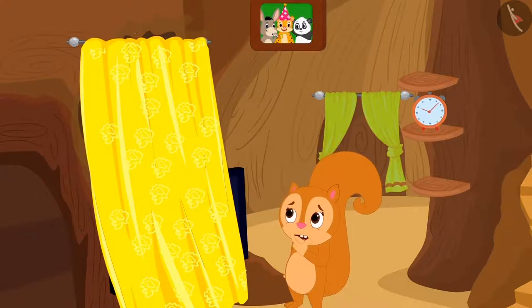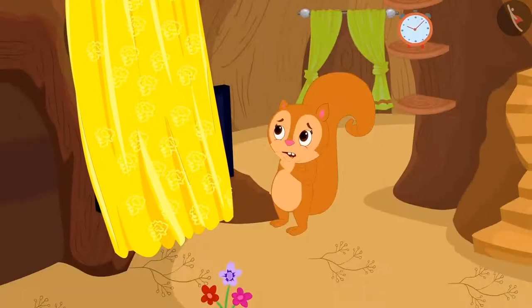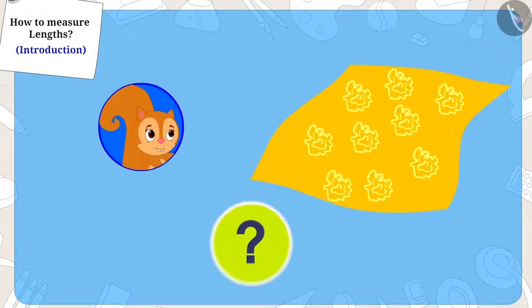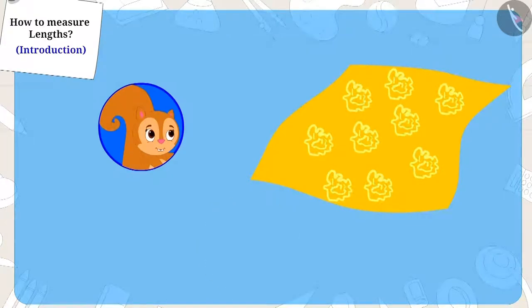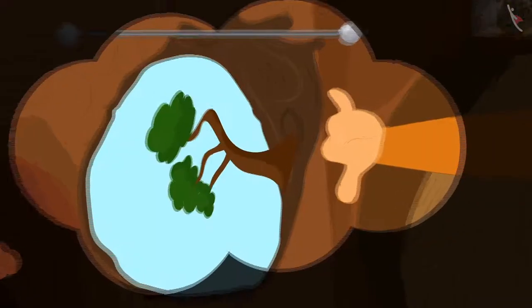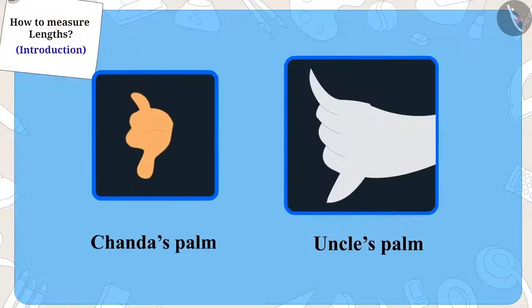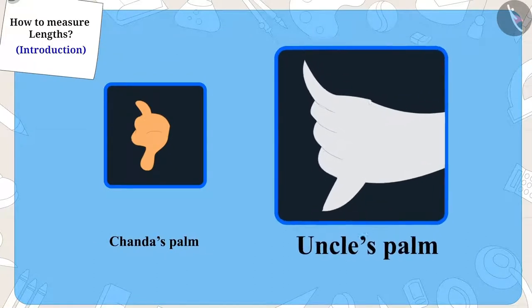But what was this? Chanda's window curtain was touching the floor! Poor Chanda became really sad. Children, can you tell me why this happened? Yes, you are right — Chanda measured the window using her palms, and while giving the cloth, uncle had measured the cloth using his palms.